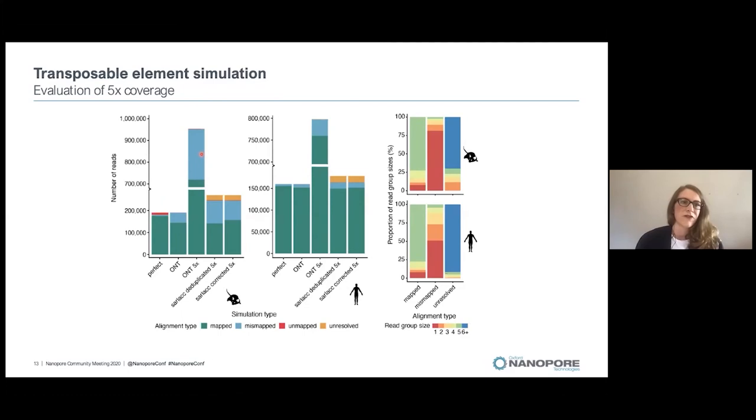Here you can see the evaluation of the 5x coverage data with the 2kb reads. So if you have perfect read identity of 2kb reads, you can map nearly all of the elements. With Nanopore at 5x coverage, you can map the elements, but you get an inflation of a lot of reads by actually five-fold. If we then produce SALAC on the same libraries, you can see that this inflation of reads drops down again.